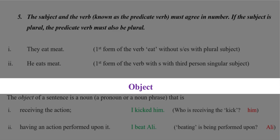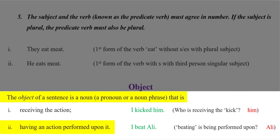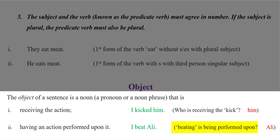Now comes the term object. The object of a sentence is a noun, pronoun, or noun phrase that is receiving the action. 'I kicked him.' Who is receiving the kick? It's him. So him is the object in this sentence. Number 2: the object is the word or collection of words that is having an action performed upon it. 'I beat Ali.' The action of beating is being performed upon Ali, so Ali is the object.